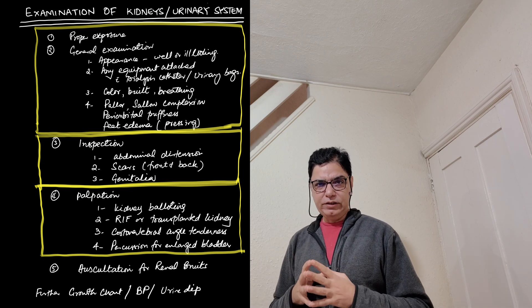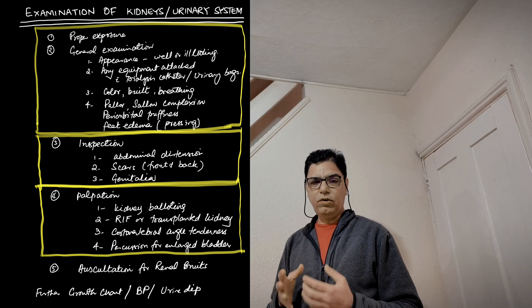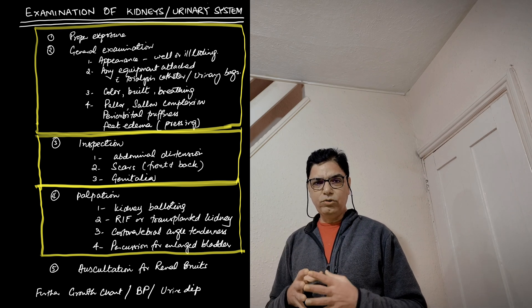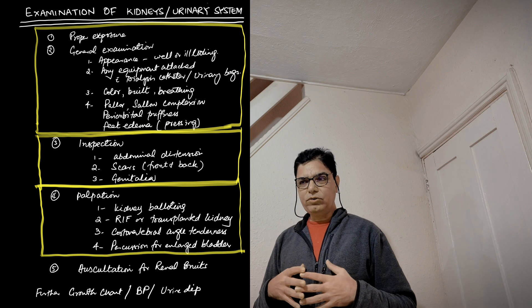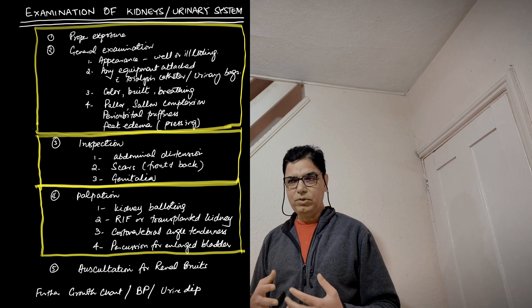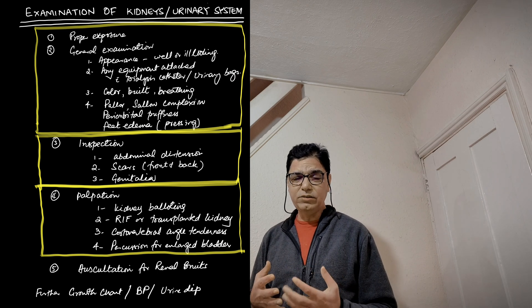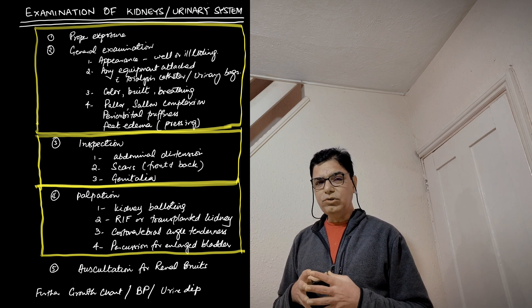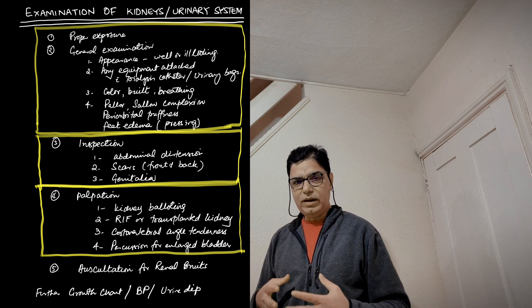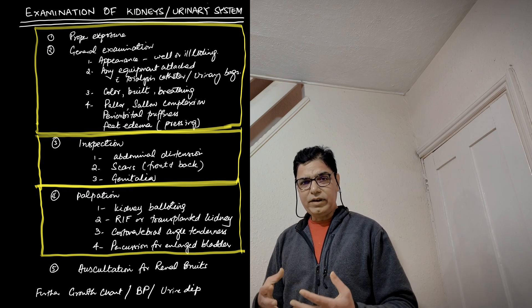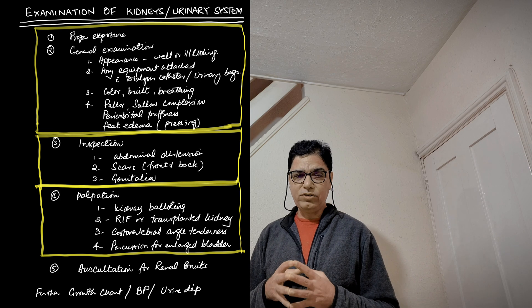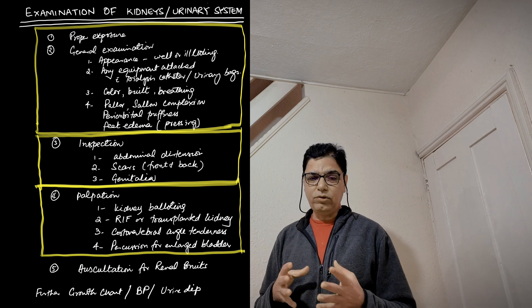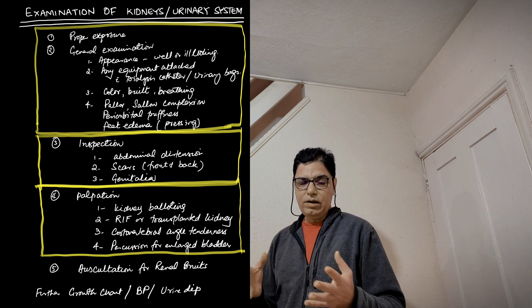Once you have done the general physical examination, you move on to do your inspection. What you look in inspection of the urinary system: first of all, you have to do the inspection of the abdomen. You look at the abdomen, whether it looks normal or whether there's an abdominal distension. If there's abdominal distension, there might be underlying ascites because of renal problem or there might be some masses. After that, what you do is you look for any scars on the abdomen, especially at the front and at the back. You would be looking for any nephrectomy scars because some kids who might have got chronic renal problem might have undergone nephrectomy. You have to look front and back both.